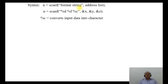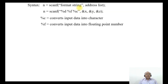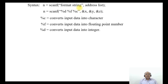%c converts the input data into a character. Similarly, %f converts input data into a floating point number, and %d converts the input data into an integer. So d, f, and c are the conversion characters.